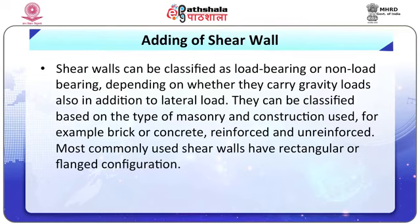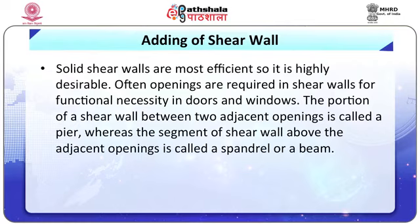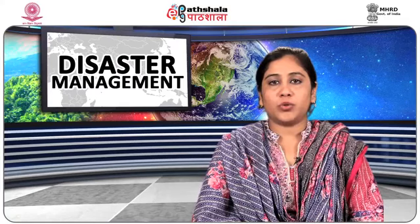Adding shear walls: shear walls can be classified as load-bearing or non-load-bearing depending on whether they carry gravity loads in addition to lateral loads. They can also be classified based on the type of masonry and construction used, for example brick or concrete, reinforced and unreinforced. The most commonly used shear walls have rectangular or flanked configurations and are frequently used for non-ductile concrete frame buildings. Cast-in-place or precast concrete elements are placed on the exterior of the building to overcome shear forces. Solid shear walls are most efficient and highly desirable. Openings for doors and windows are often required; the portion between two adjacent openings is called a pier, while the segment above an opening is called a spandrel or beam. Shear walls meeting at right angles result in flanked configurations and are normally required to resist earthquake forces in both principal directions.